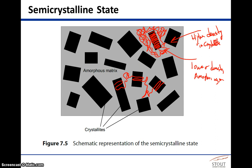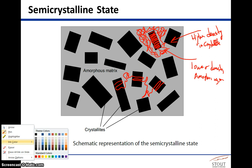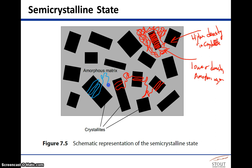What this creates are physical crosslinks — not chemical crosslinks, which makes it reversible. Other chain colors can be seen making crystalline behavior and folding into some of the same crystallites as others, creating a way of linking the entire matrix of the material together.